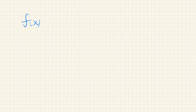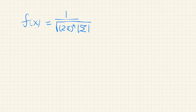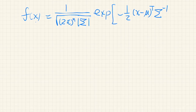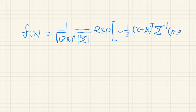Here's the density function. x is a vector, and 1 over square root of 2π to the power of n, and the determinant of a matrix sigma, and exponential of negative 1 over 2, and vector x minus vector mu transpose, and sigma inverse, and x minus mu.